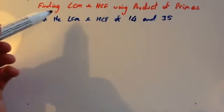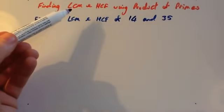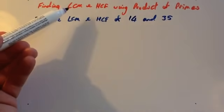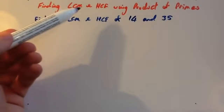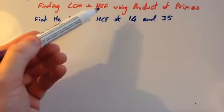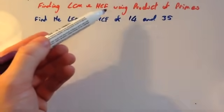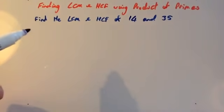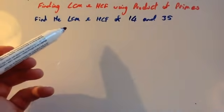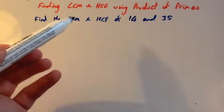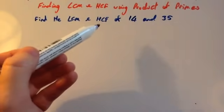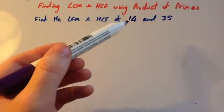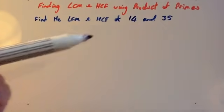We're now going to look at finding the LCM, which is the lowest common multiple, and the highest common factor using product of primes. We're going to start off by finding the lowest common multiple and the highest common factor of 14 and 35.